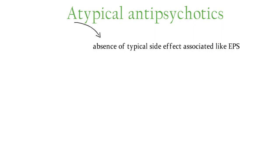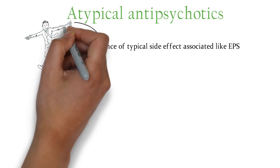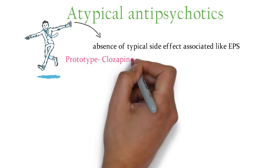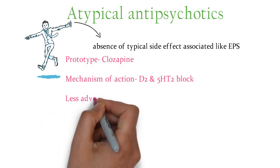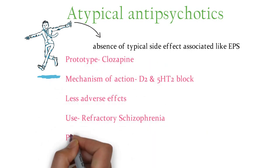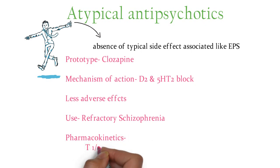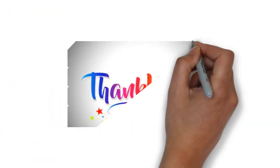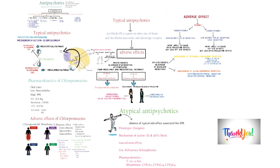Moving to atypical antipsychotics — the term 'atypical' stands for the absence of the typical side effects associated with first-generation antipsychotics. The prototype is clozapine, which acts by blocking both D2 receptors and serotonin receptors. It does possess its own adverse effects, and is reserved for refractory schizophrenia when patients are not responding to typical treatment.